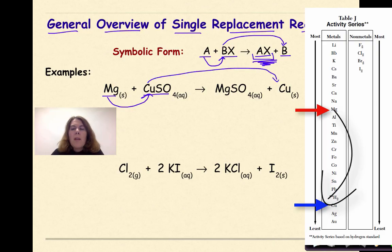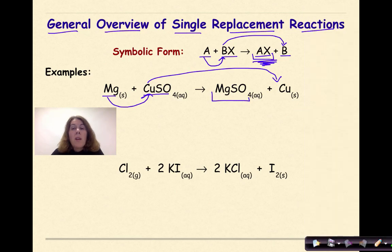The copper is now represented by itself, and the magnesium is hooking up with the sulfate to form magnesium sulfate. That is how symbolically we would represent this single replacement reaction.